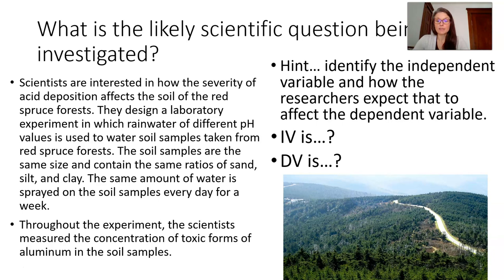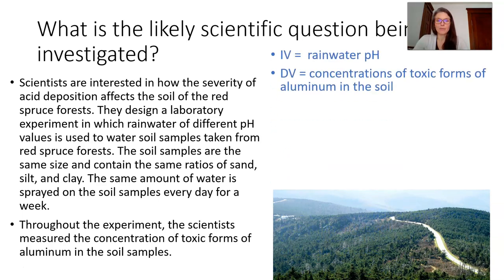Throughout the experiment, the scientists measured the concentration of toxic forms of aluminum in the soil samples. Identifying the independent and dependent variables will help you set up your scientific question. The independent variable was rainwater pH; the dependent variable was concentrations of toxic forms of aluminum in the soil that they measured.